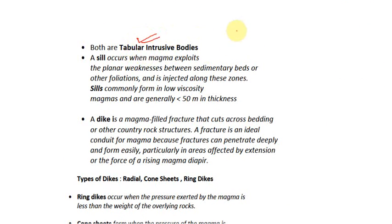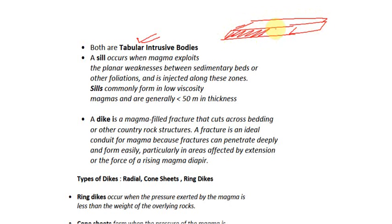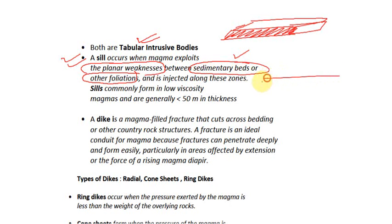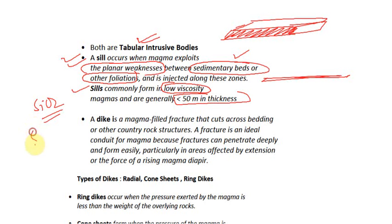Sill occurs when magma exploits the planar weakness between sedimentary beds or other foliation. If rocks are sedimentary, the weakness is bedding; if metamorphic, it is foliation; if igneous, it can be foliation or fractures. Sill commonly forms in low-viscosity magma and is generally less than 50 meters in thickness. The magma in sill is of low viscosity — basic to andesitic nature — with silica content less than 55%.